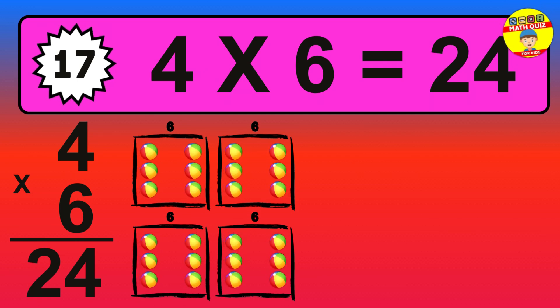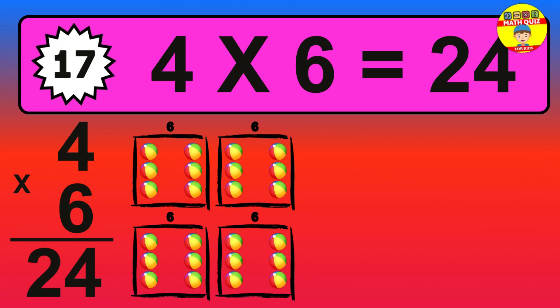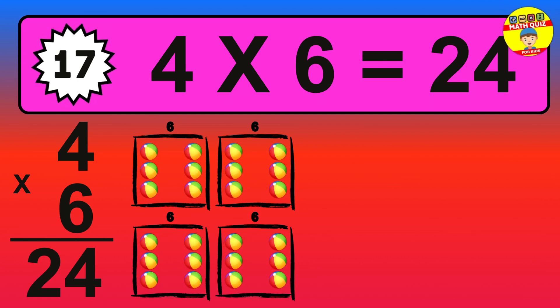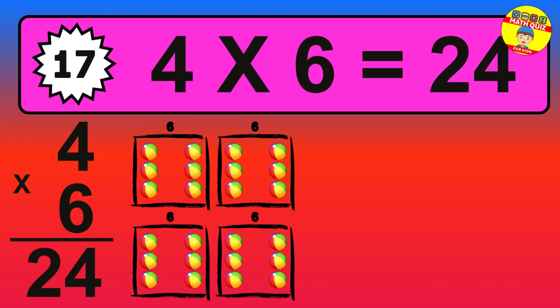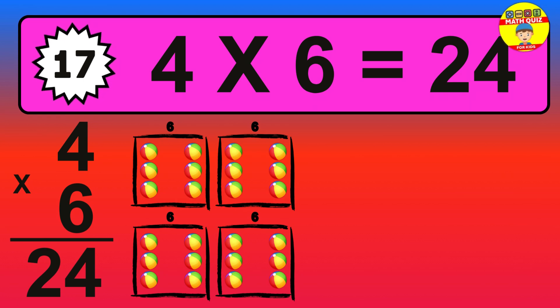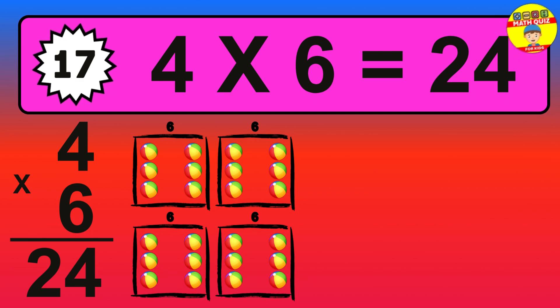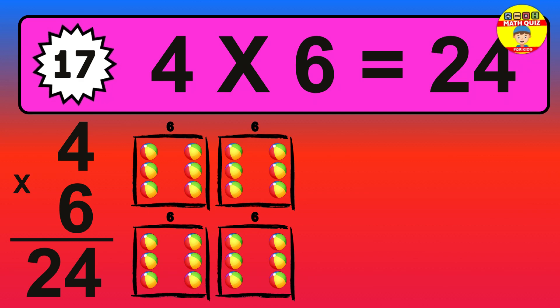Question seventeen: four times six equals what? The answer is four times six is twenty-four. To calculate, we have four groups with six balls each one. So how many balls do we have? Twenty-four balls.